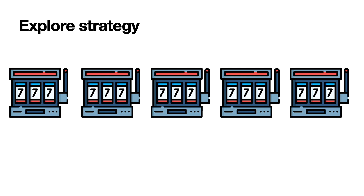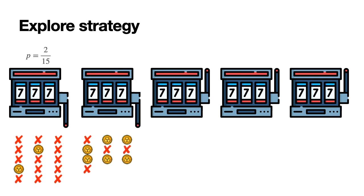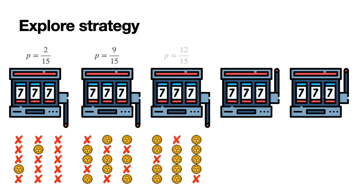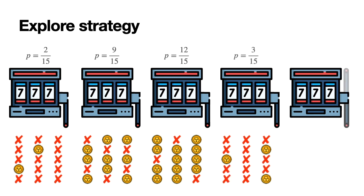For example, if we play the first machine 15 times and 2 times we get a coin, we estimate this probability to be 2 over 15. Maybe it is, maybe it isn't, but from what we have and from what we've seen, this is the best estimate. Then we play the second one and we notice that we get 9 over 15, so that's our estimate. For the third one, it's going to be 12 over 15. For the fourth one, it's going to be 3 over 15. And for the last one, it's going to be 6 over 15.